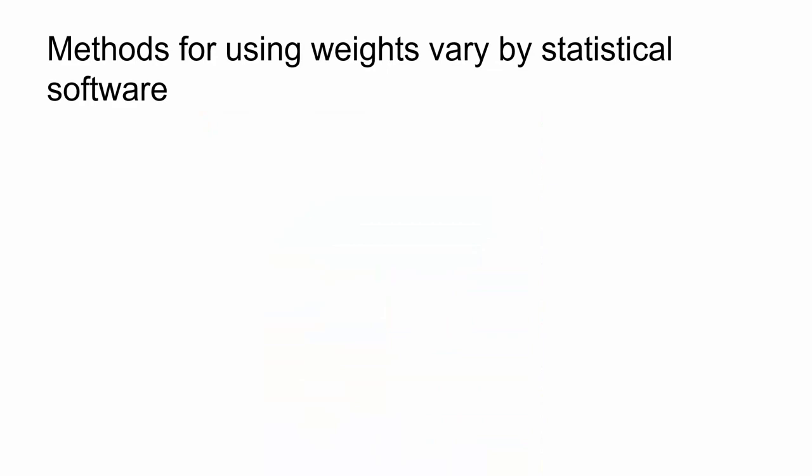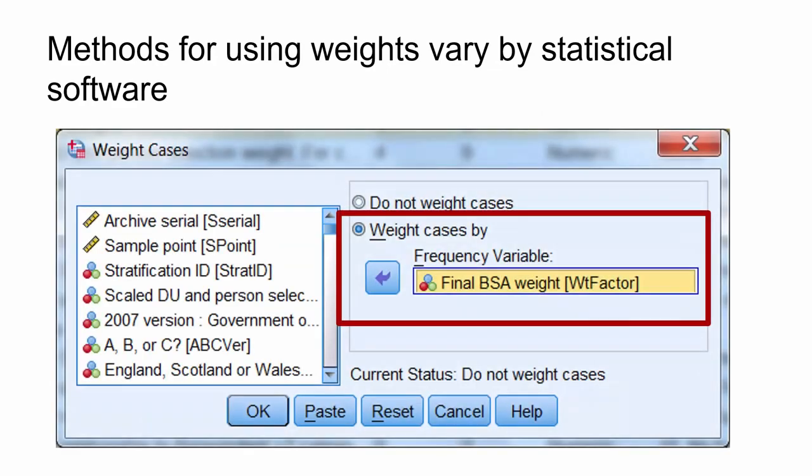Methods for using weights vary by statistical software, but usually involve indicating the name of the weighting variable before or as part of the analysis. For example, this image shows the weight cases box in SPSS, with the dataset weighted by entering the weighting variable.